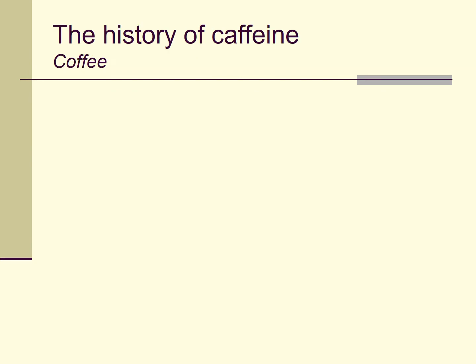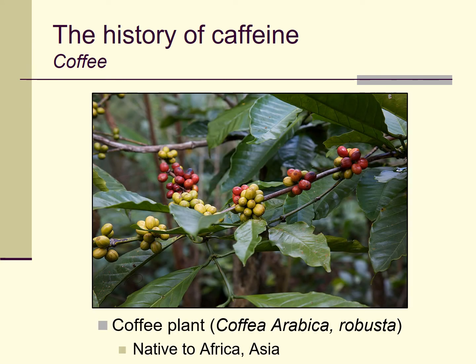I want to transition now into talking about the history of caffeine focusing on coffee. Coffee, as you probably already know, comes from the coffee plant — sort of a shrub. There are a couple of different varieties, like Arabica and Robusta. It's native to Africa and Asia, but as we'll see in a few more slides, it's now been planted around the world, including places in South America and even Hawaii.